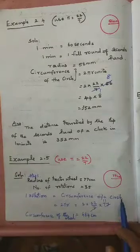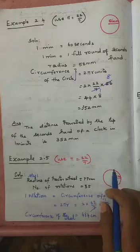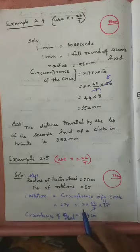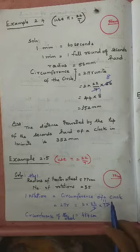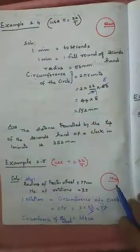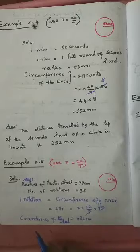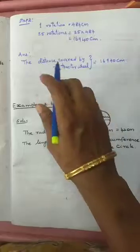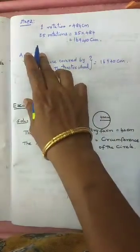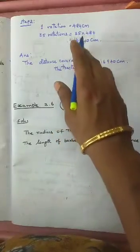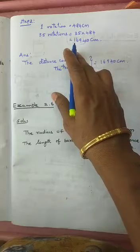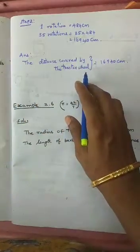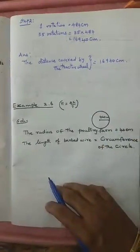One rotation equals the circumference of the circle. Circumference = 2πr = 2 × (22/7) × 77. Cancel 7: 77 ÷ 7 = 11. So 44 × 11 = 484 cm. Step 2: One rotation = 484 cm, so 35 rotations = 35 × 484 = 16,940 cm. The distance traveled by the tractor wheel in 35 rotations is 16,940 cm.